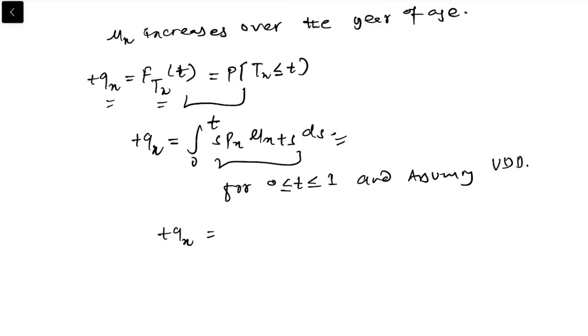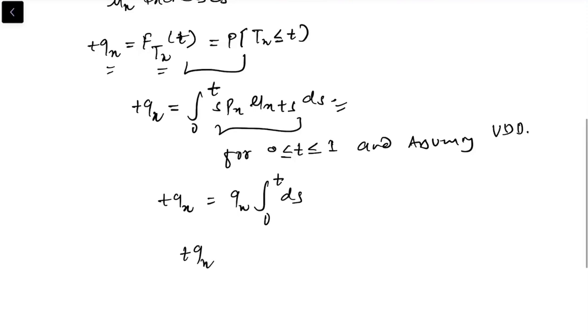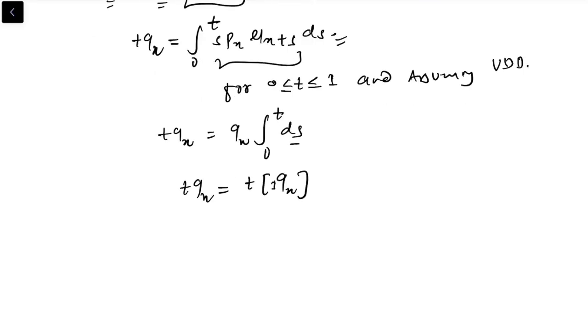So tqx equals qx times integral from 0 to t of ds, and this is equal to t times qx. The integration of ds is nothing but t. So this is our formula from UDD where t is between 0 to 1 and x is the integer age.